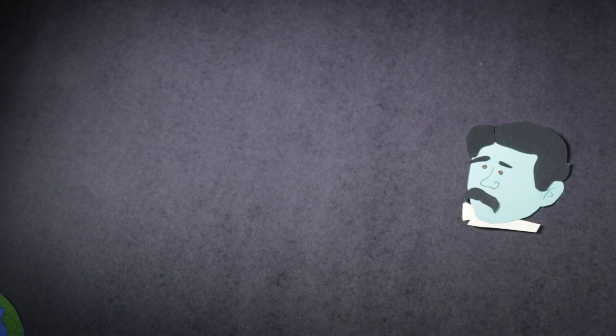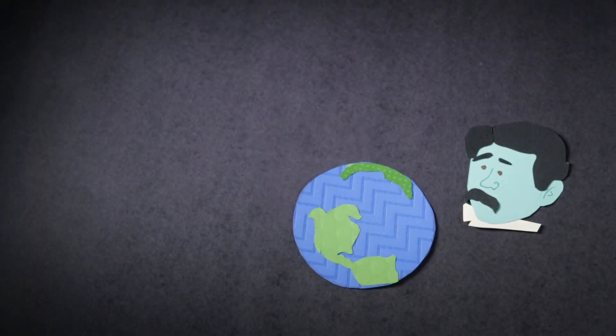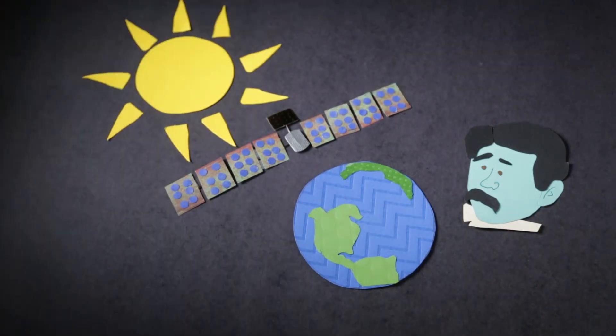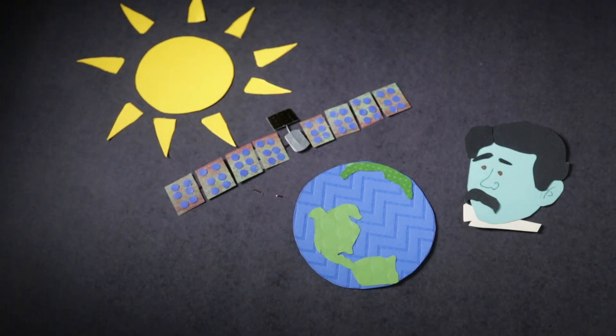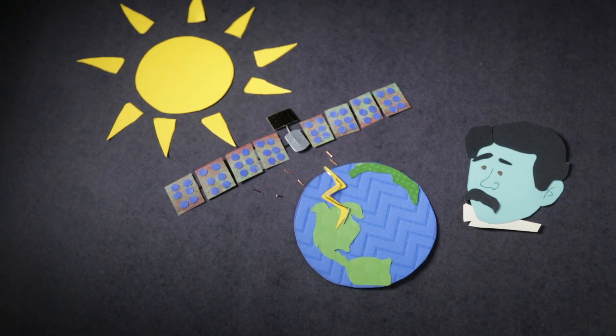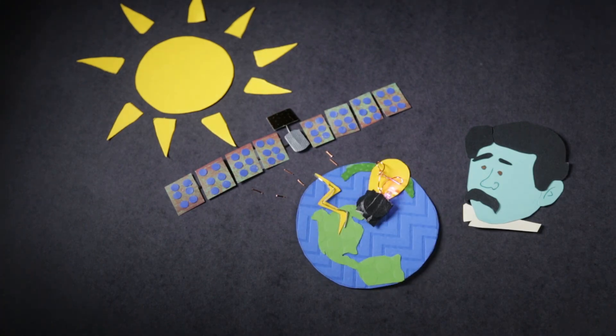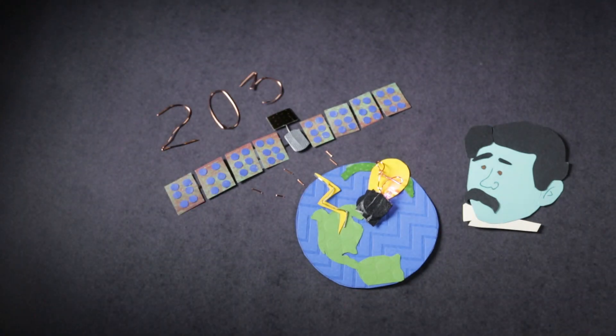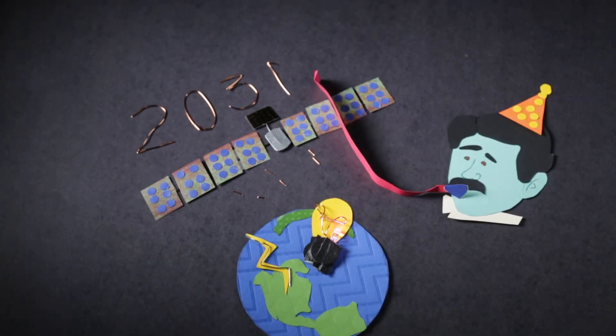But Tesla's dream of truly long-range wireless electricity is still alive. Japan's space agency is developing a solar satellite that would beam power back to Earth with microwaves. Their goal for completing the first orbiting solar power plant? 2031. Just in time for Tesla's 175th birthday.